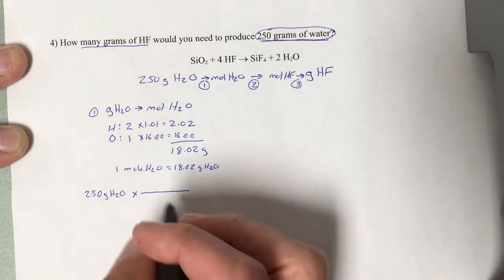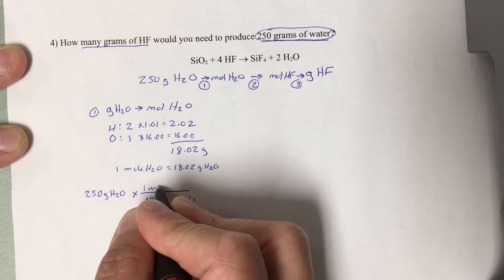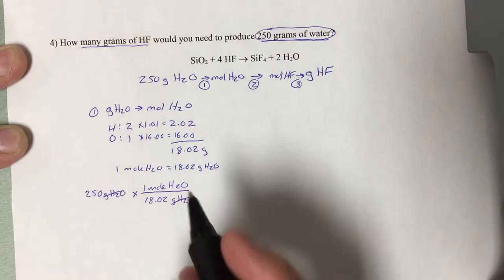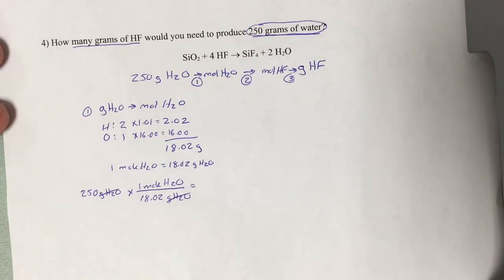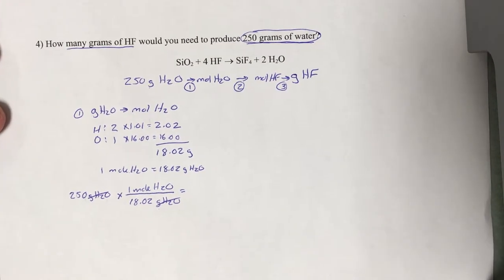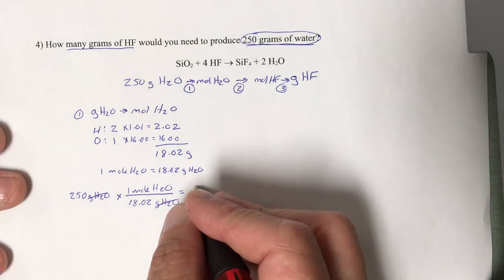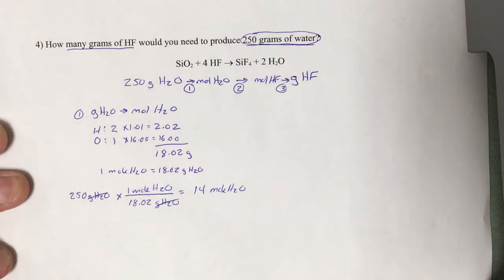We've got grams of water as we're given, so we have to put the grams on the bottom. It's all about unit cancellation. We need to get rid of the grams of water and convert it to moles. Our 18.02 is on the bottom, so we'll divide by it. 250 divided by 18.02 is 13.87. If I'm using significant figures, I'd round that to 14. There you have it, first step done.